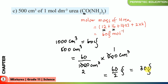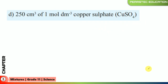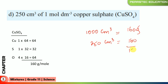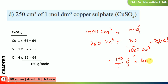The last example is 250 cubic centimeters of a 1 mol per cubic decimeter copper sulfate solution. The molar mass of copper sulfate is 160 grams per mole for 1000 cubic centimeters. For 250 cubic centimeters: 160 ÷ 1000 × 250 = 160 ÷ 4 = 40 grams.